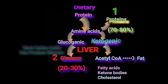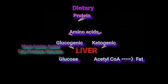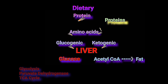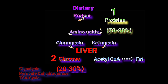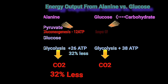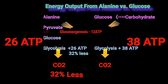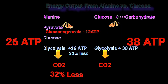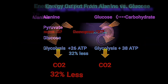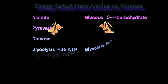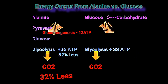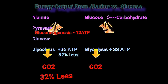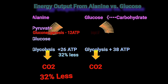Most amino acid carbon skeletons can be used to synthesize glucose, which in turn can be further catabolized through glycolysis, pyruvate dehydrogenase, and the TCA cycle to produce energy. However, the energy output from catabolism of glucose synthesized from amino acids is about 32% less than catabolism of glucose derived from carbohydrates. Therefore, glucogenic amino acids converted to glucose are a less efficient source of energy than glucose derived from carbohydrates.